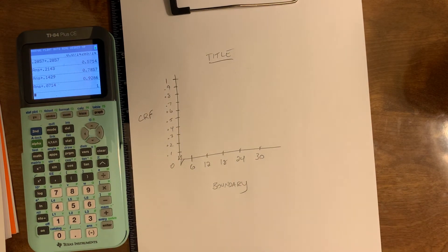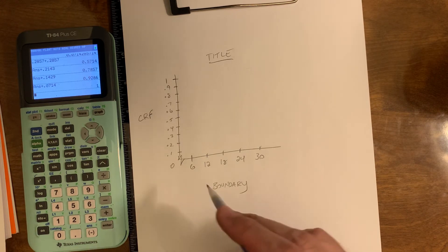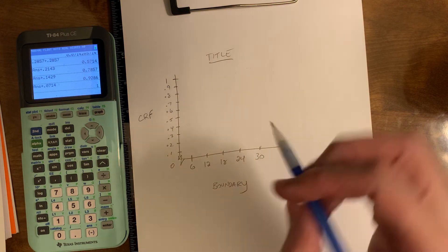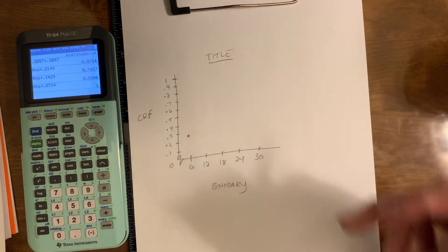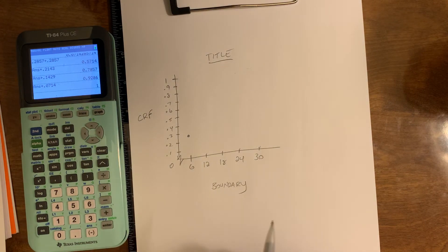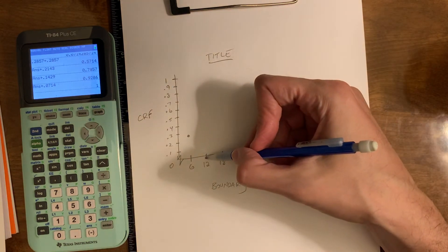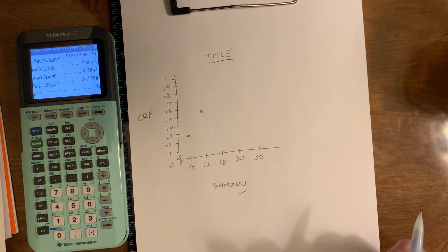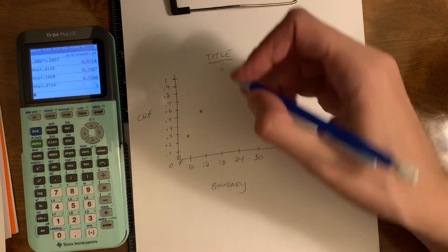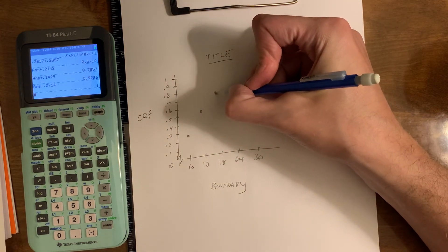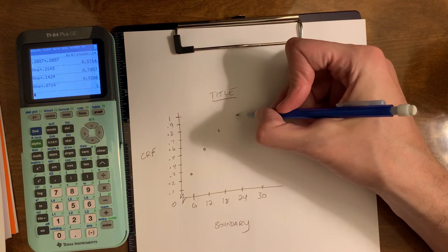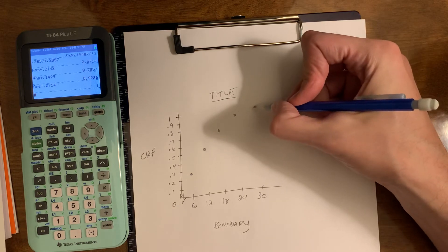Here's how you're going to make the ogive now that we have it all set up. The cumulative relative frequency at the end of each class is what you're going to plot. So by the end of the first class, we had accumulated 0.2857. I'm going to put a dot at about where 0.2857 would be. By the end of the next class, we're at 0.5714. Then by the end of the third class, 0.7857. And then we're at 0.9286, which is really close to the peak. And at 30, we're at the peak.